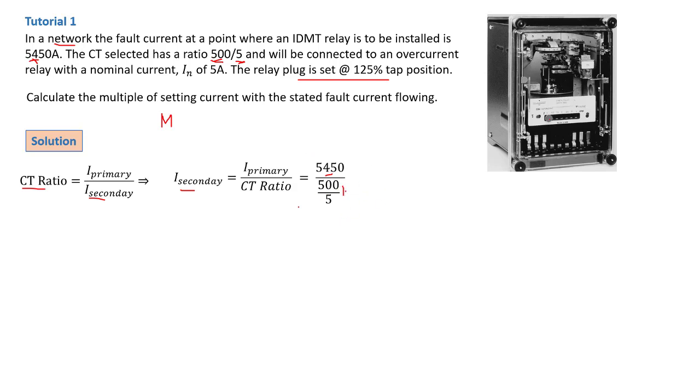You need to permutate this division of another division. That will mean the 5 will go over the top. So the answer will then be 54.5 amps. This is then your secondary current.